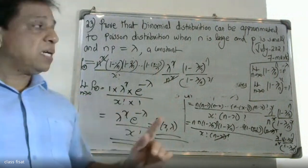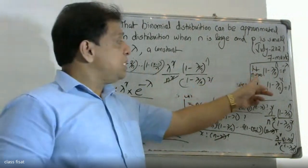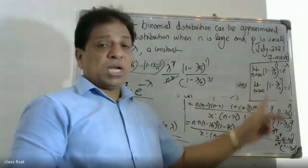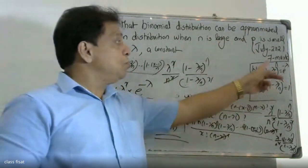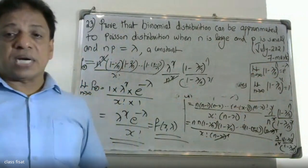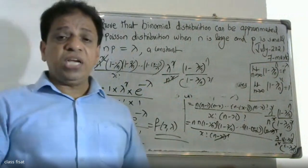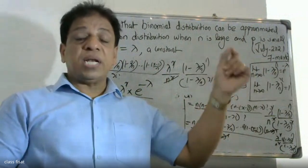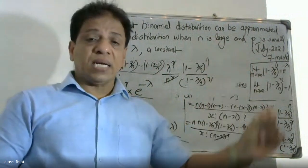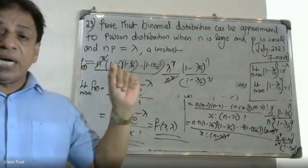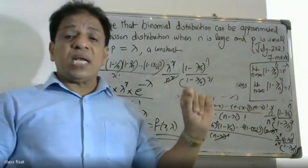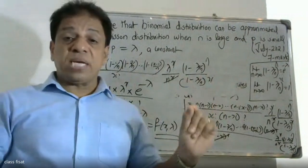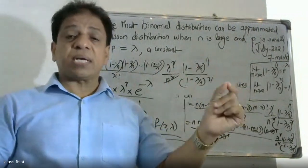We have used two key results. First: limit n tends to infinity of 1 minus lambda by n whole raise to n equals e raise to minus lambda. Second: limit n tends to infinity of 1 minus lambda by n whole raise to x equals 1, since x is finite and 1 by n tends to zero.